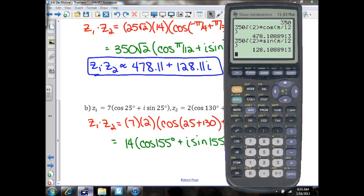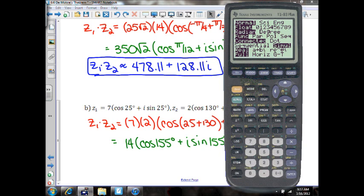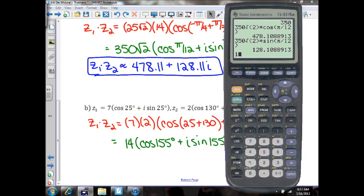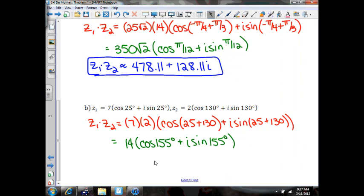Now in this case here, we're going to make sure we are in degree mode because degrees are given to us in the problem. We're going to take 14 cosine of 155. And think about where 155 is. Cosine would actually be negative in this case. So we're going to have negative 12.69.